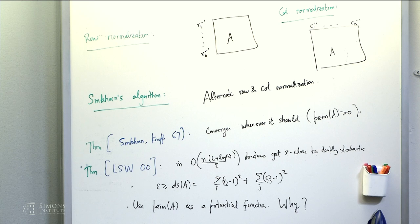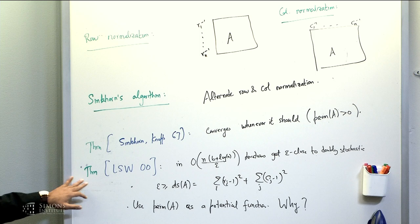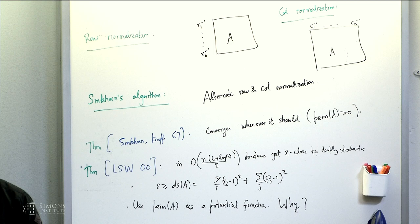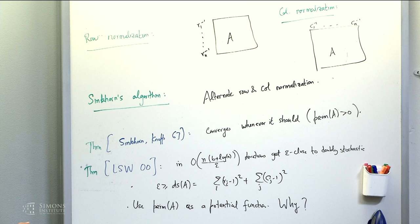However, they didn't provide any efficient guarantees for convergence — probably because they didn't care about it. The efficient guarantees were provided in a paper by Linial, Samorodnitsky, and Wigderson in 2000. They proved that in roughly n times (b + log n) over epsilon iterations, where b is the bit complexity, you get epsilon-close to doubly stochastic. Precisely, the L2 norm of the row and column sums vector from the all-ones vector is at most epsilon.